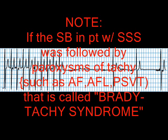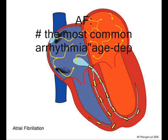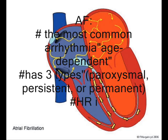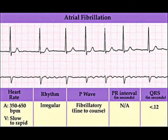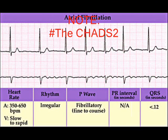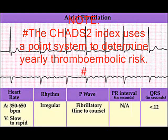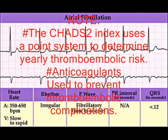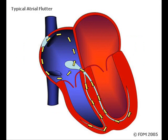This is called the Brady-Tachy syndrome. Atrial fibrillation is the most common arrhythmia, age-dependent, and we have three types: paroxysmal, persistent, and permanent. Heart rate is usually between 300 to 600 bpm in the permanent form. The CHADS index uses a point system to determine thromboembolic risk, which is why anticoagulants are used to prevent thromboembolic complications in AF.